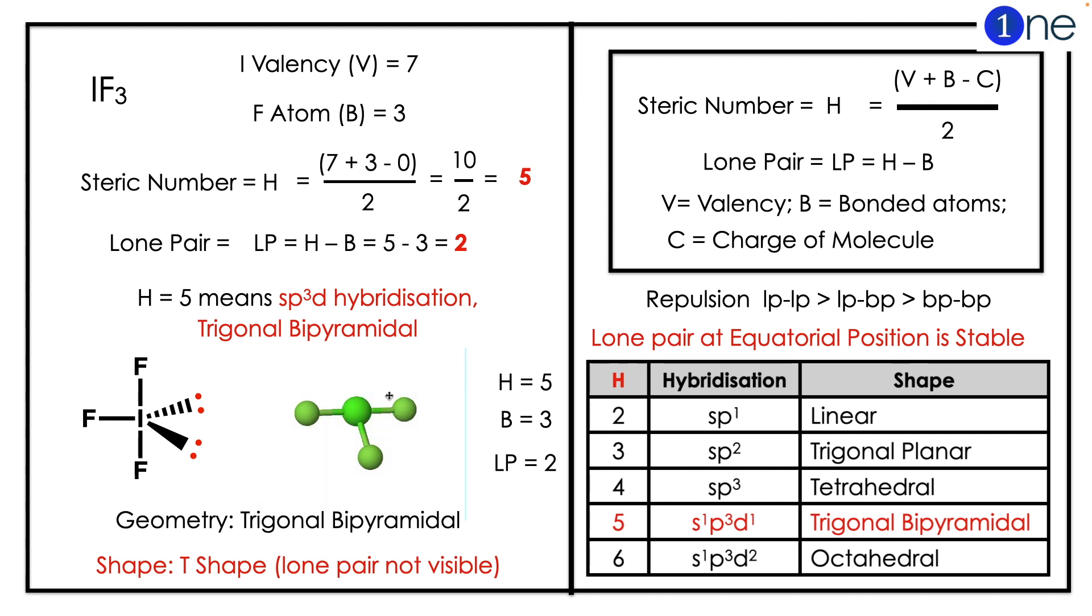Lone pairs always come to the equatorial position, so the structure will be like a T-shape. You can understand the shape easily by the animation.